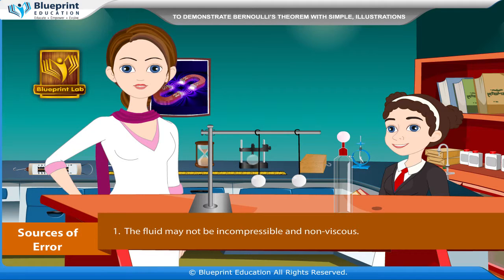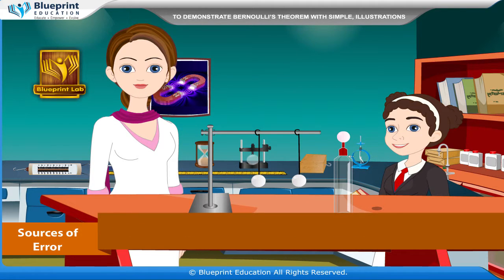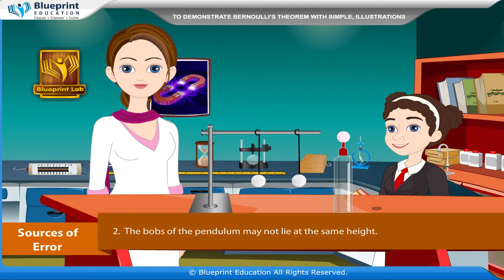Sources of Error: the fluid may not be incompressible and non-viscous. The bobs of the pendula may not lie at the same height.